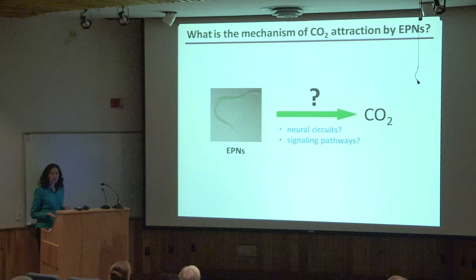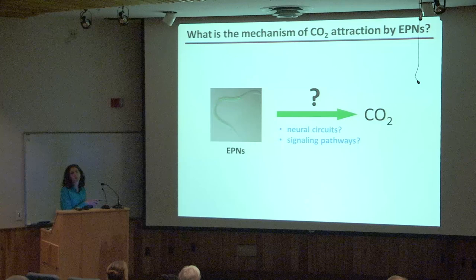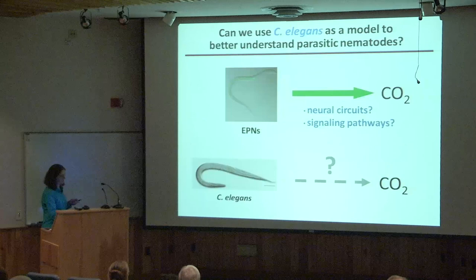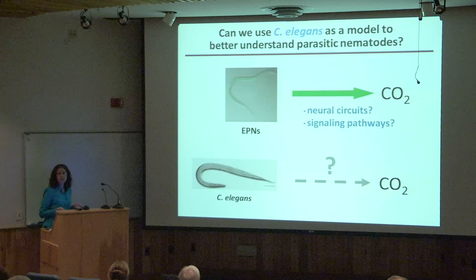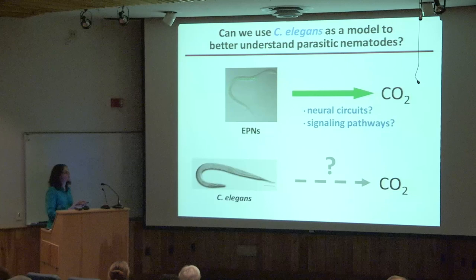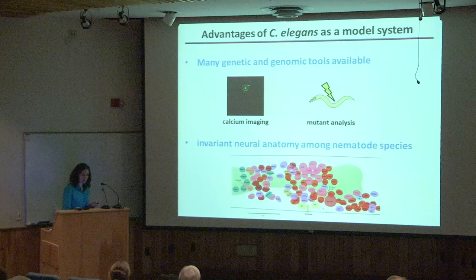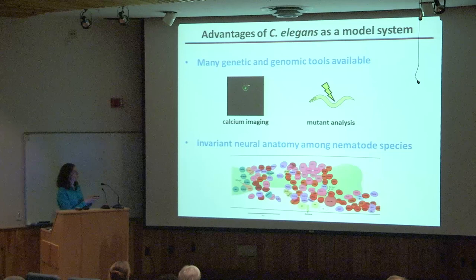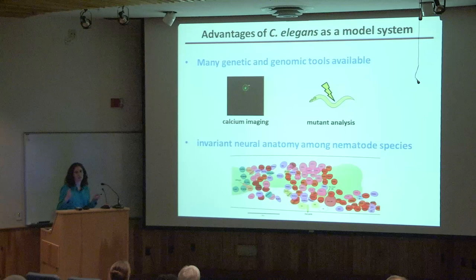To understand the mechanism of CO2 attraction — specifically the neural circuits and signaling pathways — we turned to C. elegans. C. elegans is much easier to work with than parasitic worms, and there are many genetic and genomic tools available. For example, we can label individual neurons with genetically encoded calcium indicators and perform calcium imaging to monitor neural activity, and we can do mutant analysis with knockouts for many genes. Importantly, neural anatomy is relatively invariant among nematode species — all nematodes have about 300 neurons found in consistent positions, so insights from C. elegans can be applied to parasitic worms.